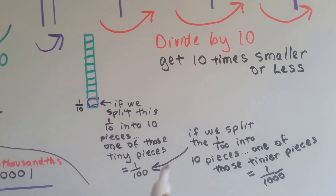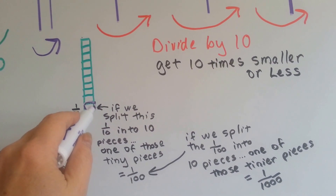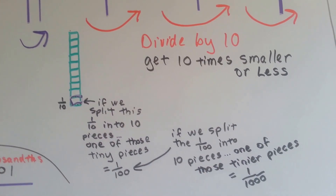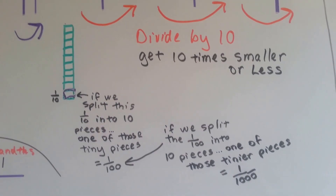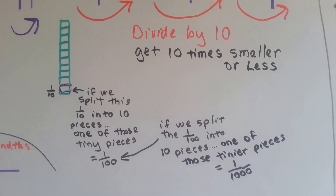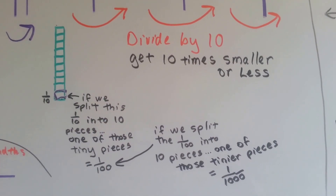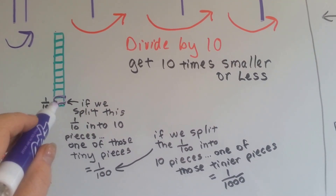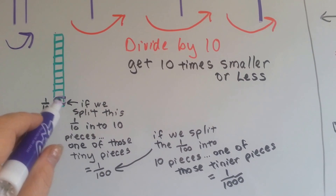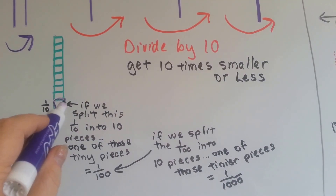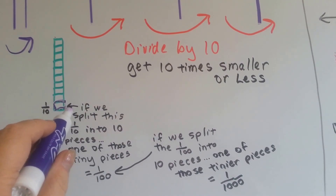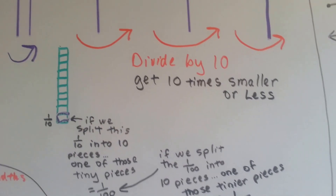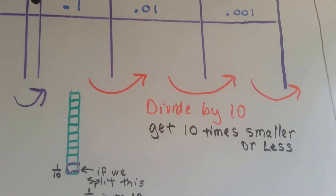If I split this little tiny one hundredth of a piece into ten pieces, it would be in tinier pieces that would be one thousandth. So imagine splitting this into ten pieces, then taking one of those ten pieces and splitting it into ten pieces, and having one of those tiny, tiny pieces — that's one thousandth. That's how tiny it is.